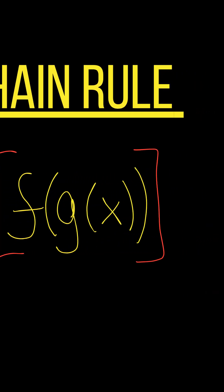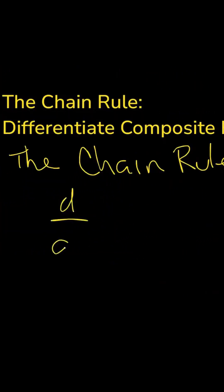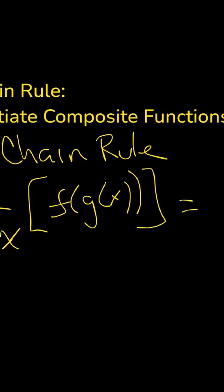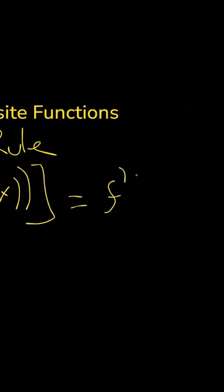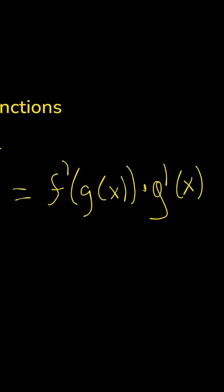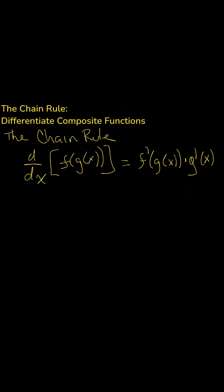The chain rule is the derivative of that composite function. So if I have the derivative with respect to x of f of g of x, that is going to be equal to the derivative of f evaluated at g times the derivative of g of x. You can think of this as outside and inside functions. The outside is f, the inside or inner is g. So you take the derivative of the outside with the inside still there.